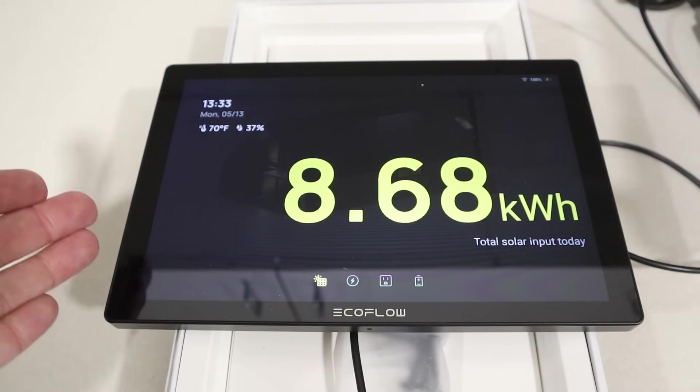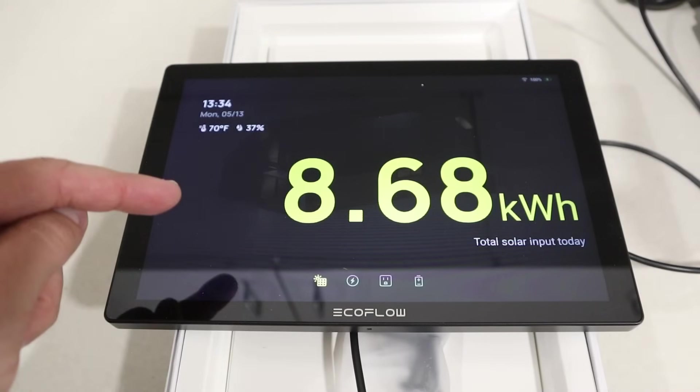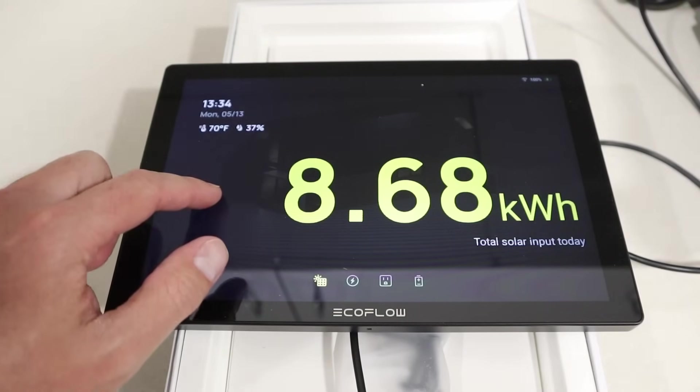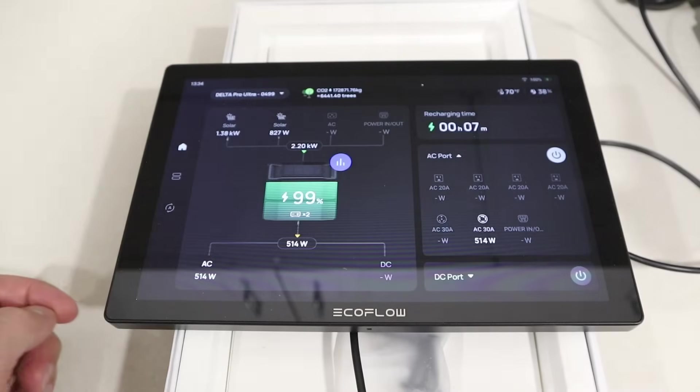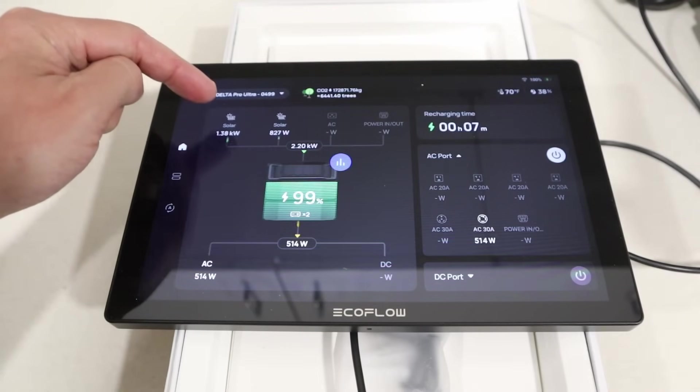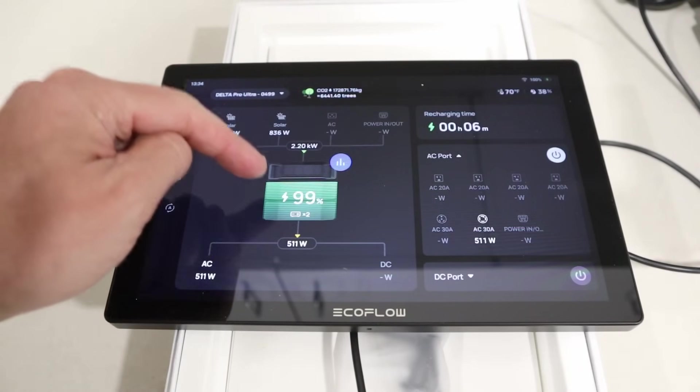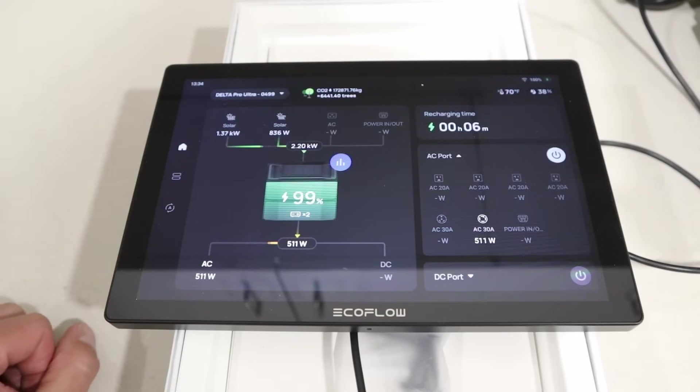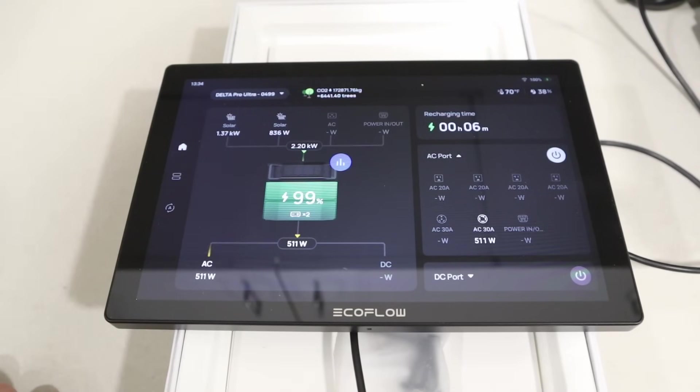This is the EcoFlow Power Insight tablet. It breaks down the power input and output really well. So I just want to show you guys this really quick. Currently, we've gotten 8.68 kilowatt hours from solar today. Right now, we're getting 1.38 kilowatts from one array and 827 watts from the other array for a total of 2.2 kilowatts. The battery is almost full. It's at 99% state of charge. You can see the power going out is right around 500 watts via the AC output.